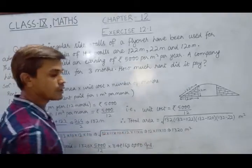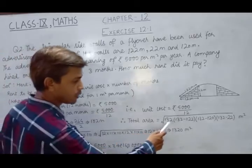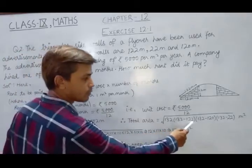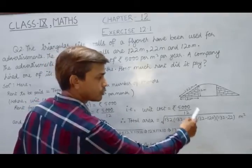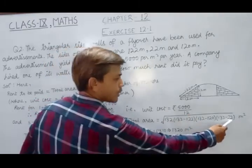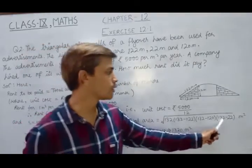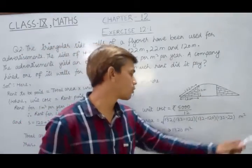Now, total area using Heron's formula, we have under root S, 132, S minus A, 132 minus 122, S minus B, 132 minus 120, S minus C, 132 minus 22 square meter.